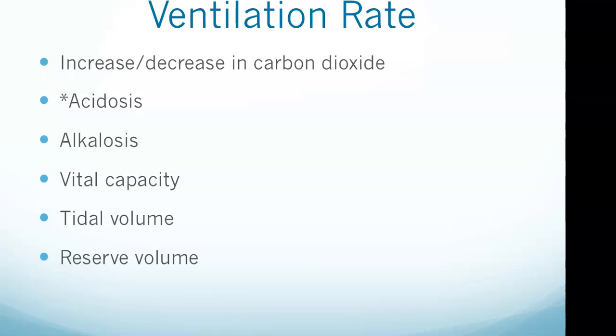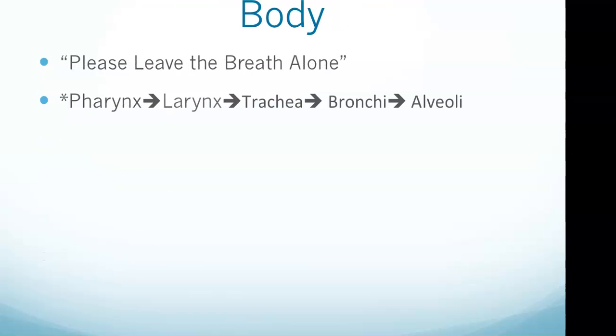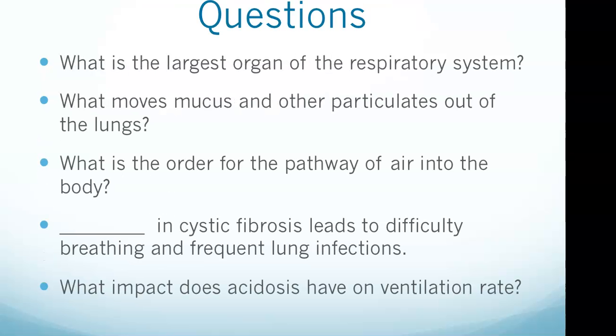These concepts are extremely important. In acidosis, the concentration of carbon dioxide is high. An increase in protons decreases the pH of blood, causing acidosis, and leads to an increase in ventilation rate. This answers bullet point five: what impact does acidosis have on ventilation rate?